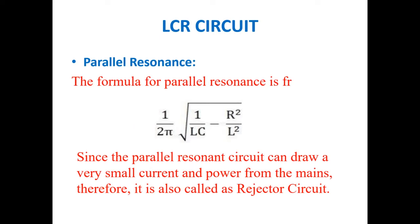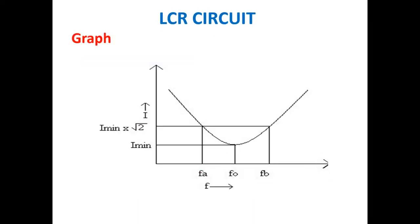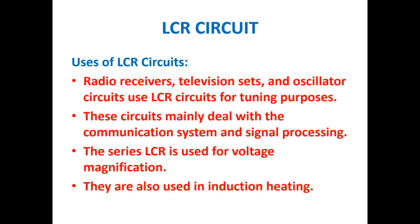The formula for parallel resonance is Fr = 1 / (2π) × √(1/LC − R²/L²). Since the parallel resonance circuit draws very small current and power from the mains, it is also called a rejector circuit. In the LCR parallel connection graph, frequency is taken along the X-axis and current along the Y-axis. At a value of I_max / √2, draw a line parallel to the X-axis which cuts the graph at two points Fa and Fb. The difference between Fb and Fa gives the bandwidth under the LCR parallel circuit.